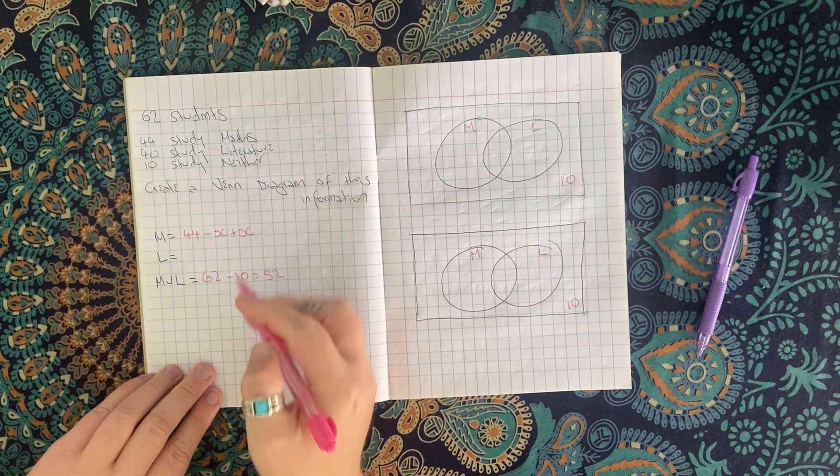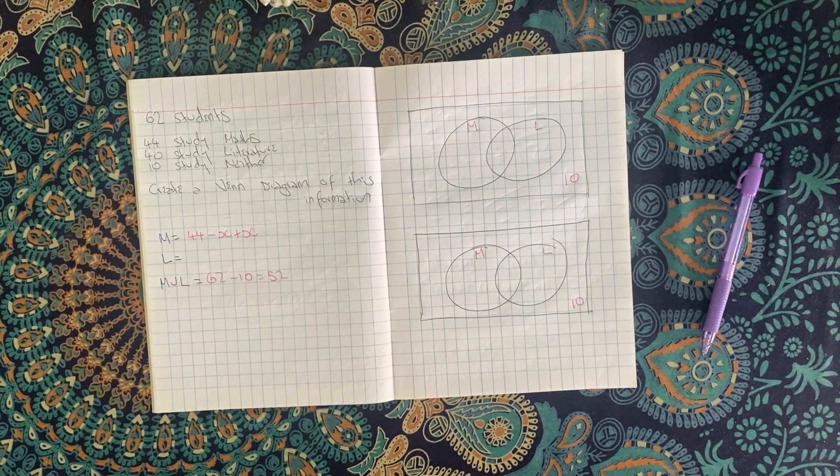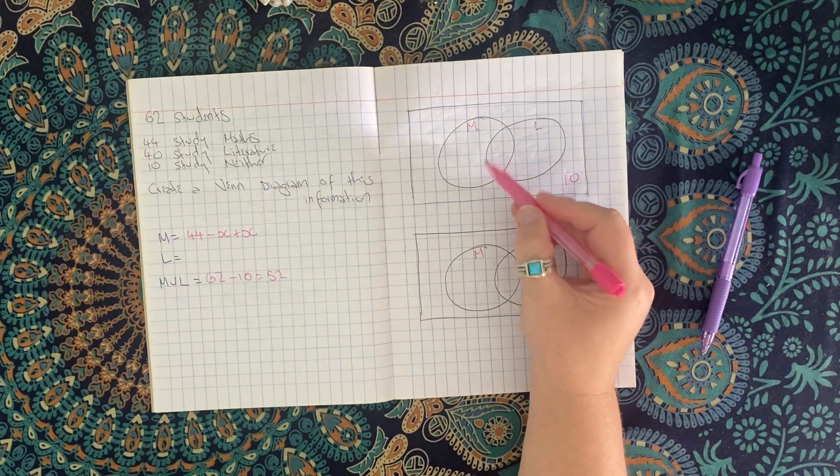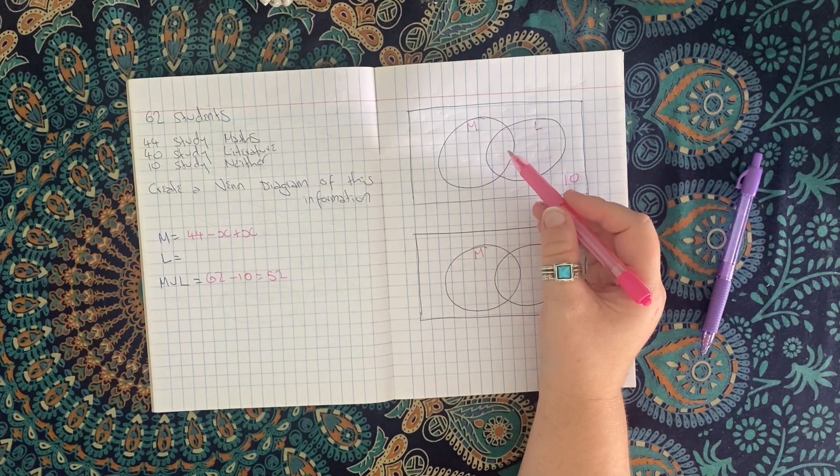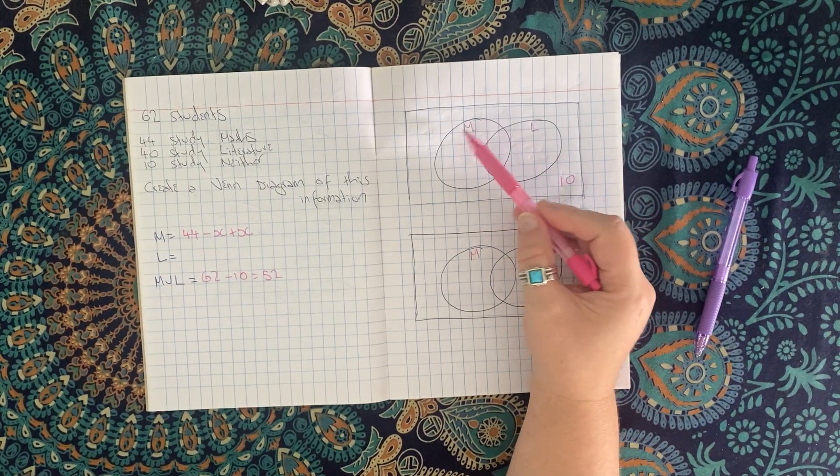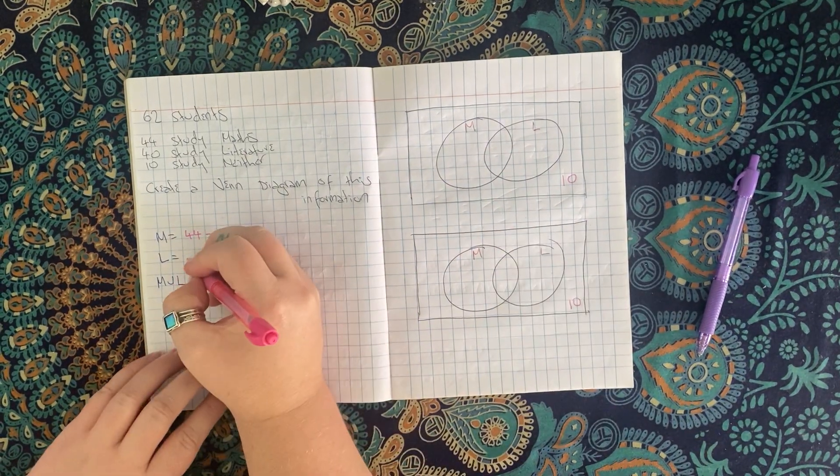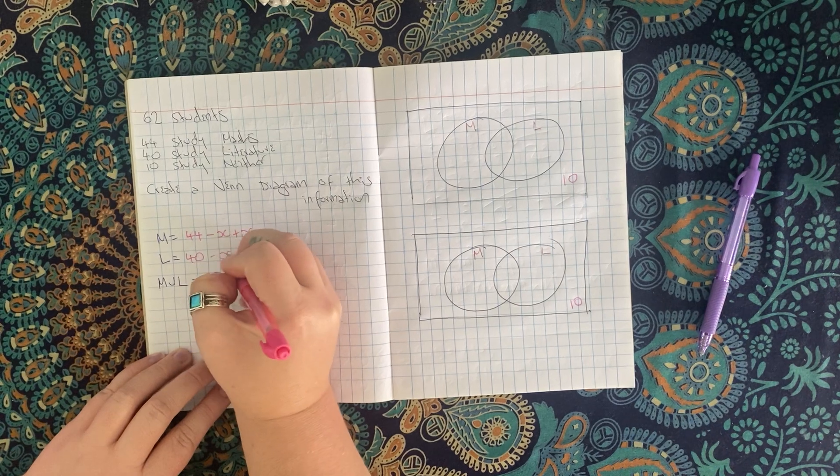It'll become apparent why I'm doing this weird thing in a minute. But I know that there are 44 people here. I'm adding and subtracting this, so I still have the full thing, and I'm going to do the same for this one. Then I'm going to think about how I would find X. I'm going to use these two equations and actually add them together.